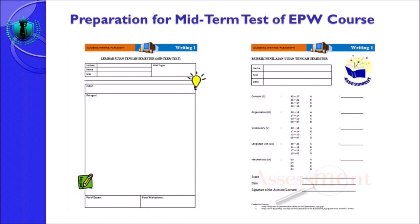For your midterm test — in the display there are two pictures. Di sebelah kiri ada lembar ujian tengah semester yang saya design sendiri, ada nama, NIM, nilai tugas, judul, paragraf, serta paraf dosen dan paraf mahasiswa. Ini bisa anda tulis paragrafnya langsung atau dikirimkan kepada dosen untuk diperiksa. Di sebelah kanan ada rubrik penilaian ujian tengah semester — terdiri atas beberapa komponen yaitu content, organization, vocabulary, language use, dan mechanic.